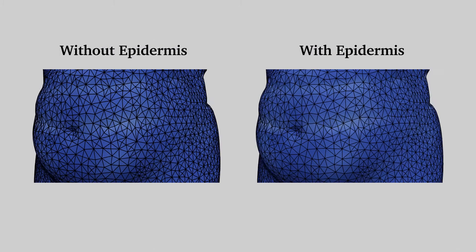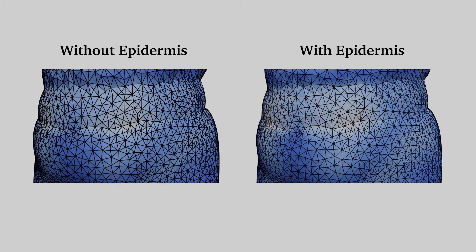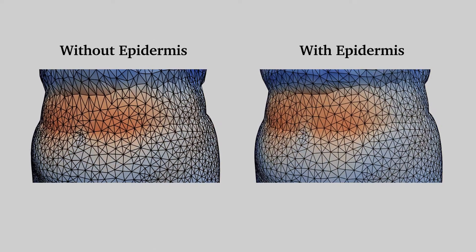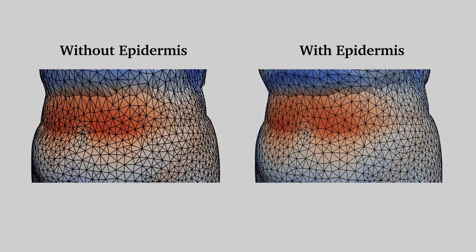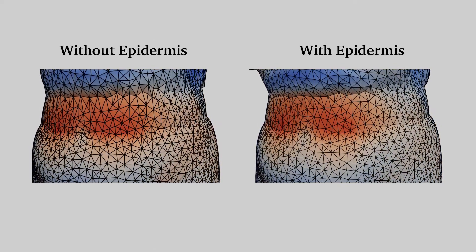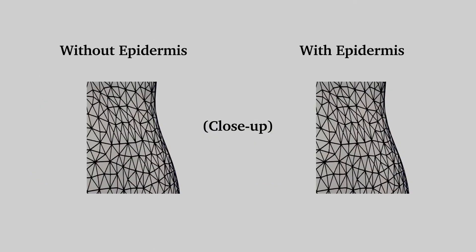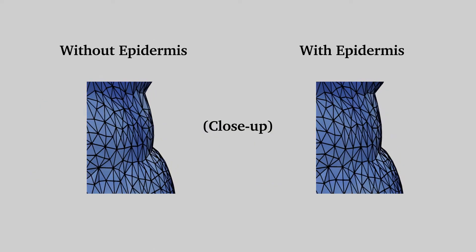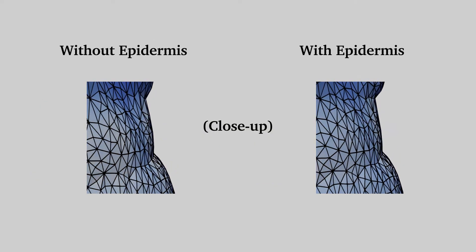Adding a simple epidermis energy term regularizes the surface, which results in a more organic-looking surface deformation. See how our method rounds out the sharp corners in the result.